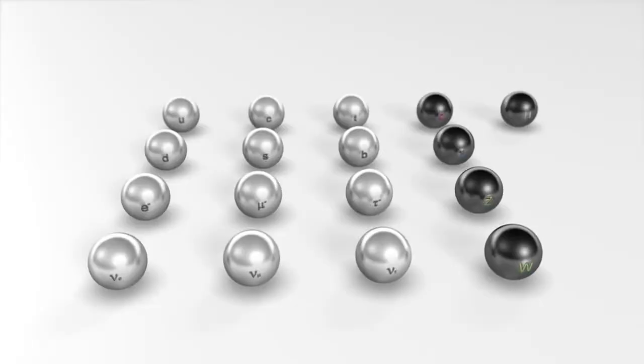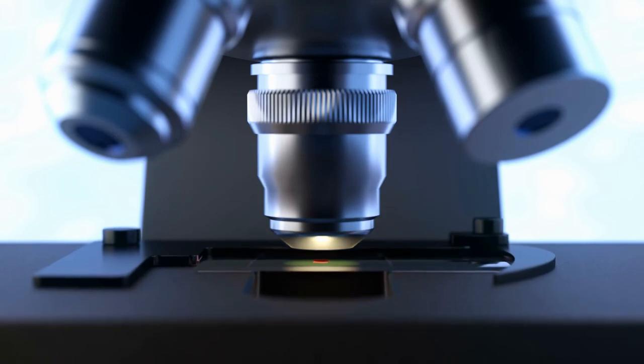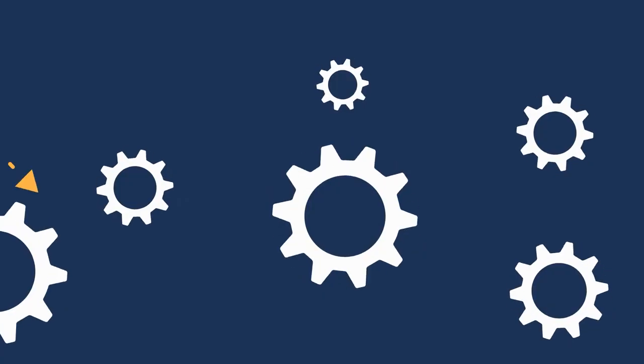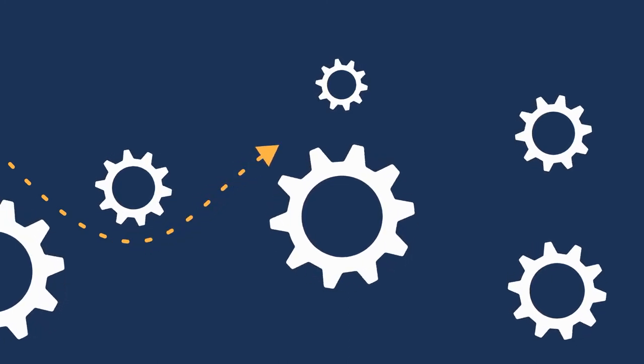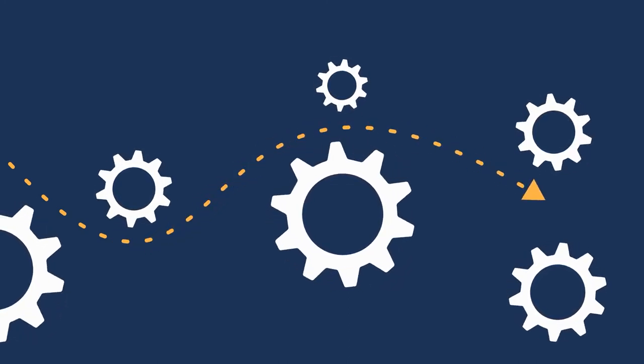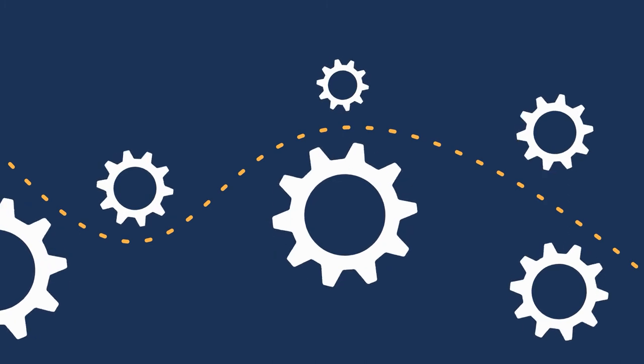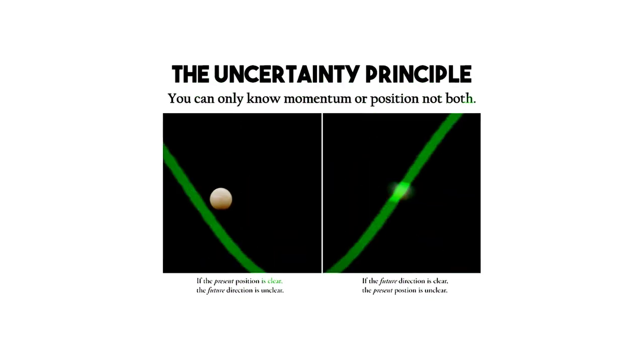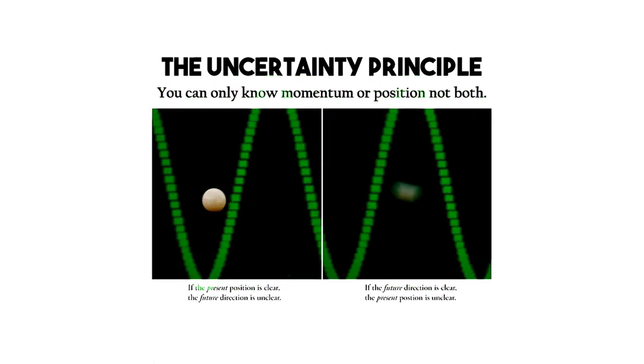In fact, the hypothetical particle called graviton is nowhere to be found using the standard model of particle physics. Another problem with these elementary particles is that we cannot directly observe them. This is because the wavelengths of light which we use to see are far too large to be reflected off of such tiny objects. And if we made the wavelengths smaller by adding more energy to them, it would alter the particles we want to view.